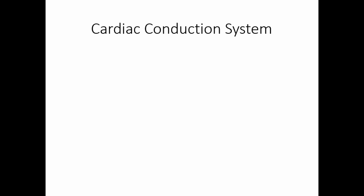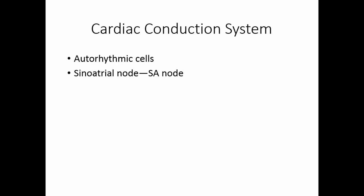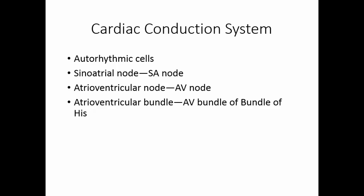The cardiac conduction system — those auto-rhythmic cells — are clustered into groups. We have the sinoatrial node, or SA node; the atrioventricular node, or AV node; the atrioventricular bundle, also known as the AV bundle or bundle of His; and the bundle branches, which go to the right and left sides of the heart.